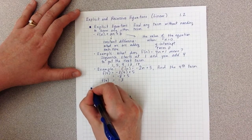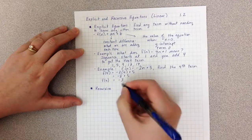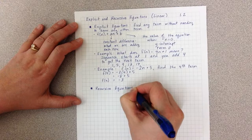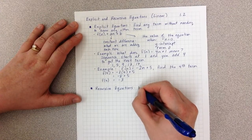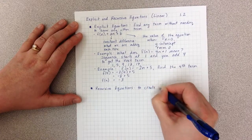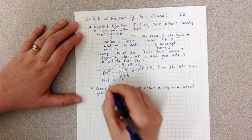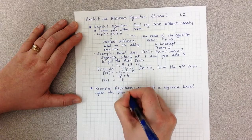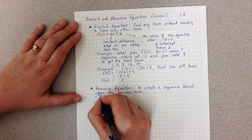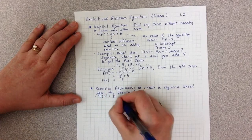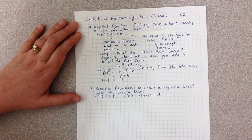The second way these equations can appear is in what we call recursive. Recursive equations are a representation that allow us to create a sequence based upon the previous term. So this, you will often see represented as f(0) equals some value, and then f(n) equals f(n minus 1) plus some value.